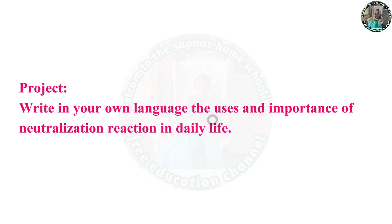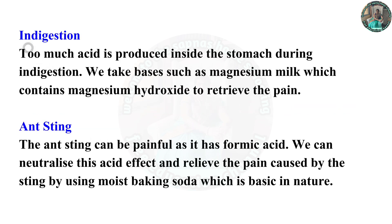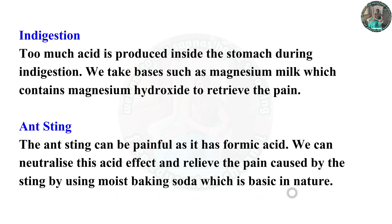Project: Write in your own language the uses and importance of neutralization reactions in daily life. Indigestion: Too much acid is produced inside the stomach during indigestion. We take bases such as milk of magnesia, which contains magnesium hydroxide, to relieve the pain. Ant sting: The ant sting can be painful as it contains formic acid. We can neutralize this acid and relieve the pain by using moist baking soda, which is basic in nature.